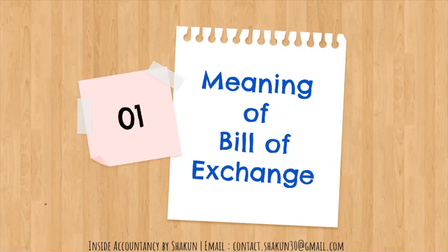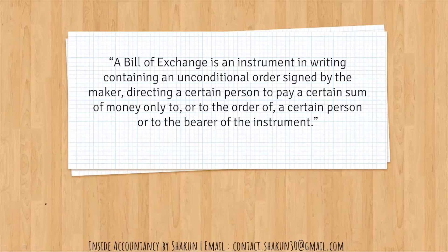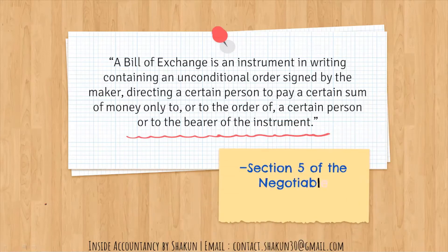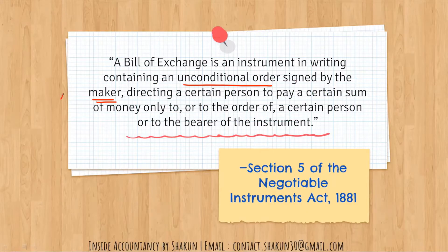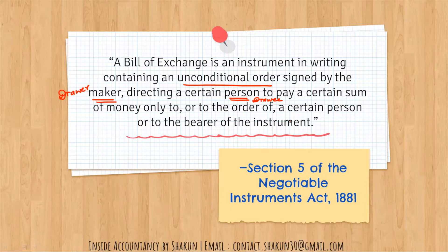A bill of exchange is an instrument in writing containing an unconditional order signed by the maker — the drawer — directing the drawee to pay a certain sum of money only to, or to the order of, a certain person or to the bearer of the instrument. I had explained this definition in detail in my previous video — you can click the 'i' button for more details.